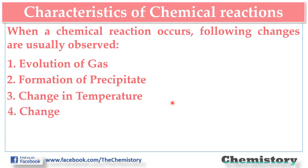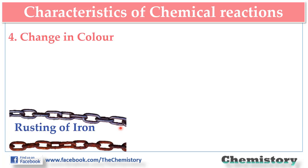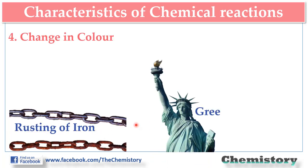Sometimes, change in color is also observed during a chemical reaction. The most common example is rusting of iron, or greening of copper.